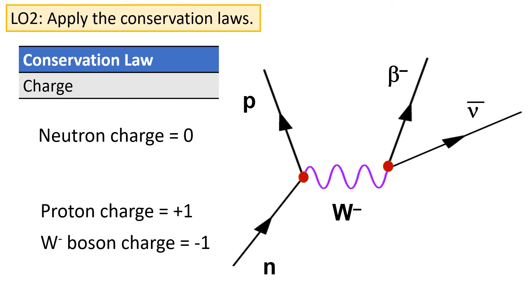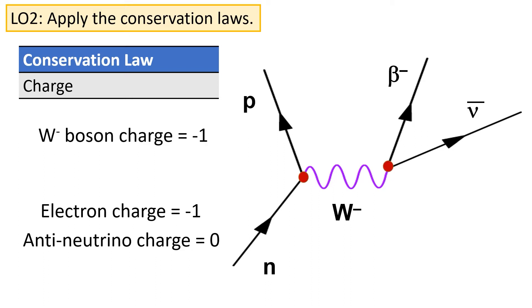If we look at the next junction, conservation of charge must also apply. Going into that junction, the W minus boson has a charge of negative one, and the electron has a charge of negative one — so again, charge is conserved. The anti-neutrino, of course, has a charge of zero.